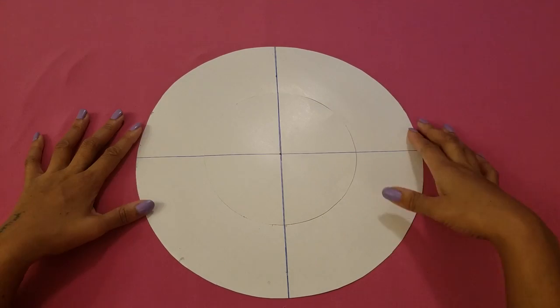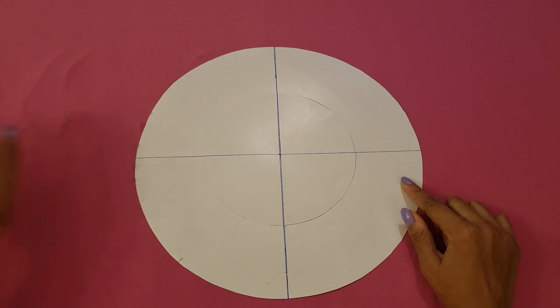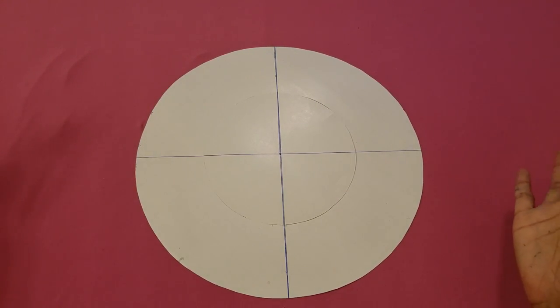For my pattern, I cut out a circle with a radius of 6.5 inches, and you can use a compass to do that or whatever method you use to make circles.